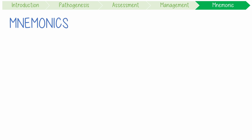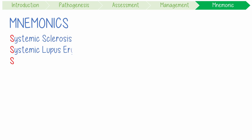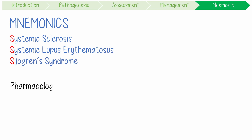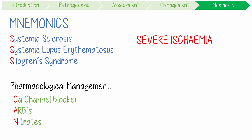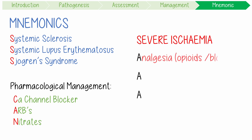To recap with some mnemonics: systemic illnesses causing secondary Raynaud's are sneaky, slimy syndromes starting with S — systemic sclerosis, systemic lupus erythematosus, and Sjogren's syndrome. Pharmacologic management can work with calcium channel blockers, angiotensin 2 receptor blockers, and nitrates. Finally, severe ischemia requires AAA therapy: analgesia, anticoagulation, and alprostadil.